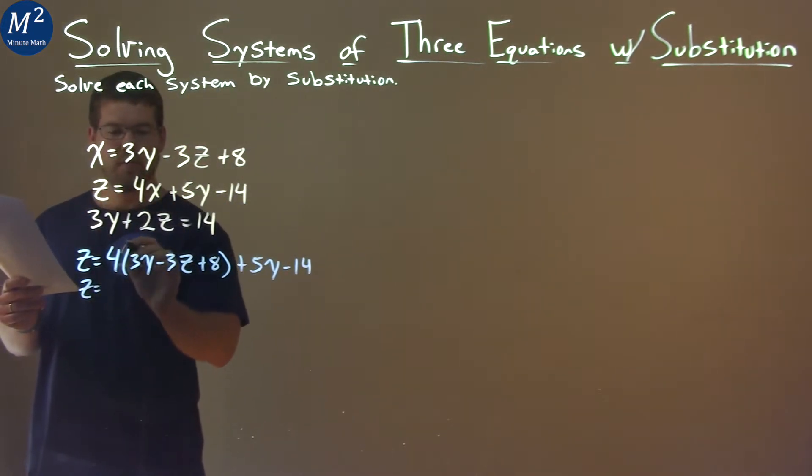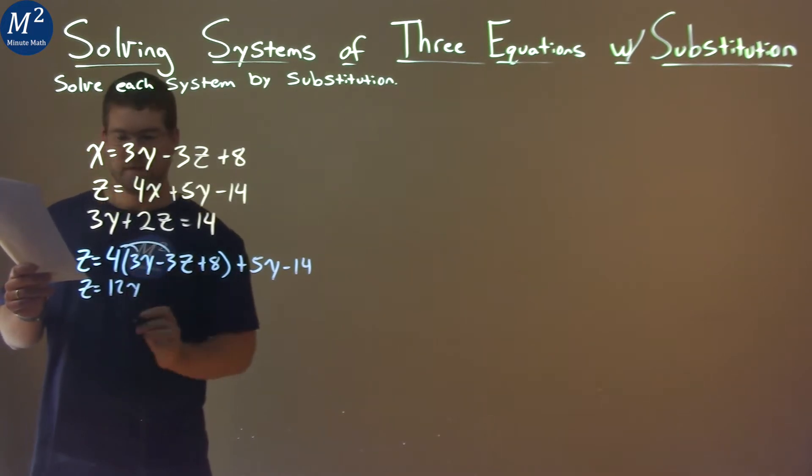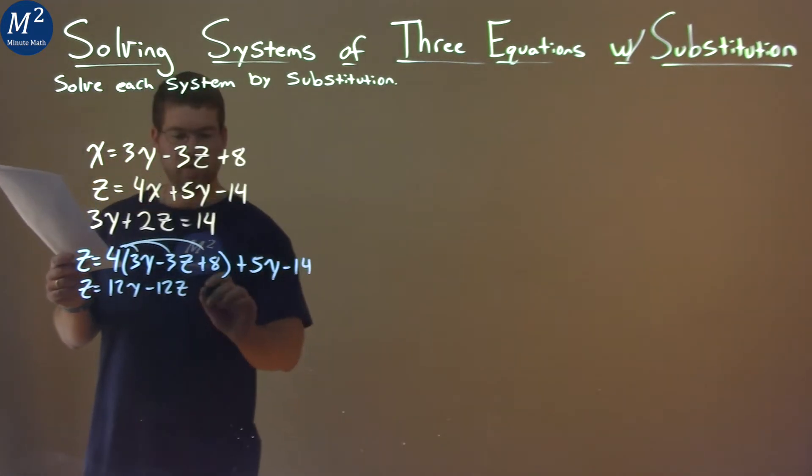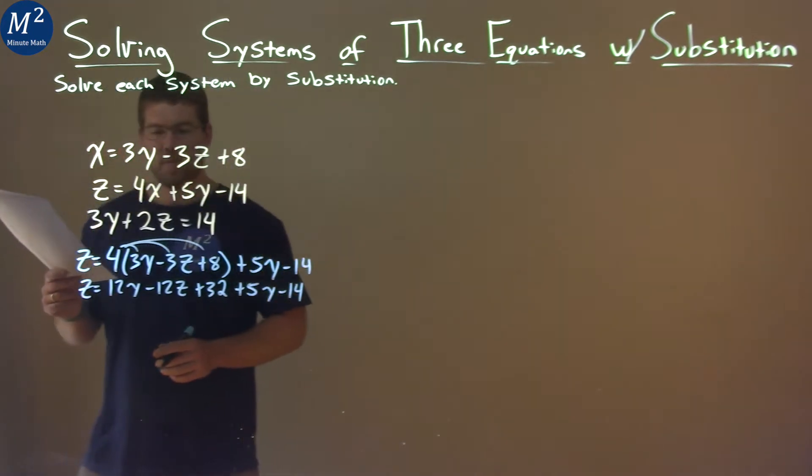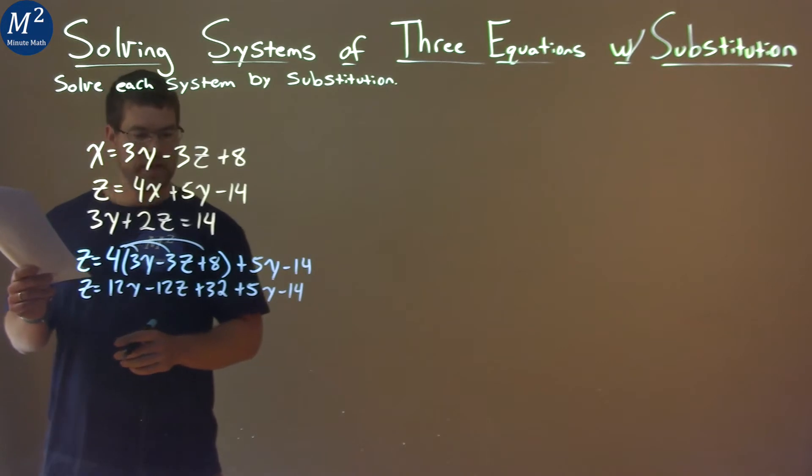So z equals 4 times 3y is a 12y, 4 times a minus 3z is a minus 12z, and 4 times an 8 is a 32. And we bring down the 5y minus 14. From there, let's combine our like terms where we can.